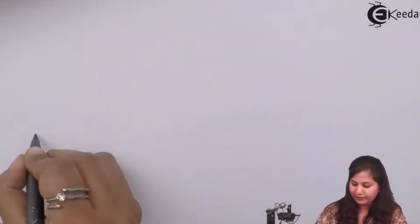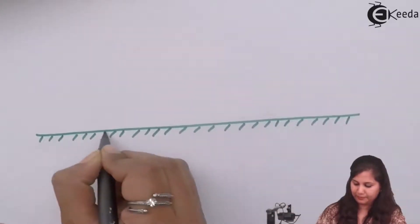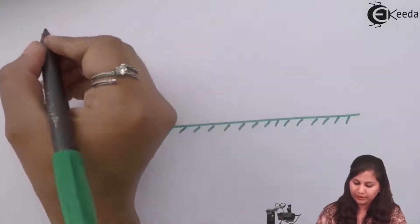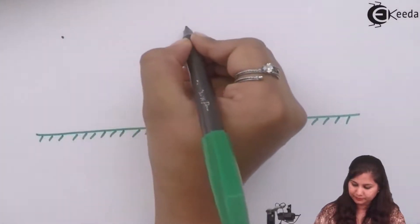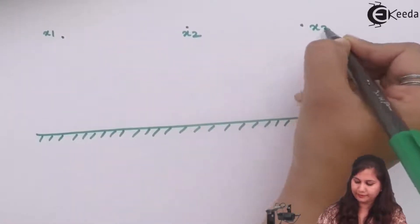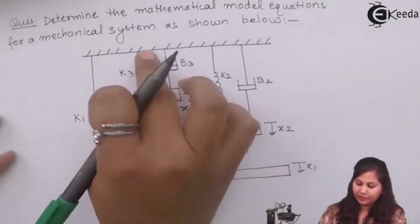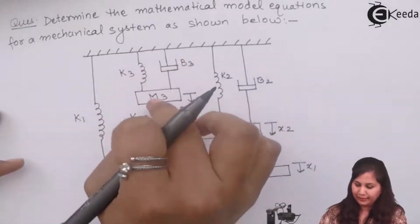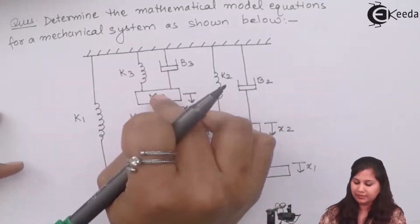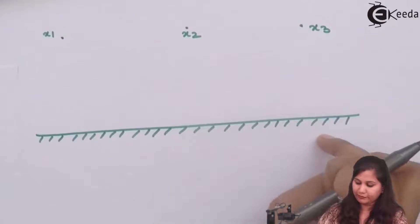First we draw the reference line. Then we have the three displacements x1, x2, x3, so three nodes are drawn. Between x3 and the rigid surface we have k3, b3, and m3, so the x3 displacement is associated with these three elements: spring, damper, and mass.